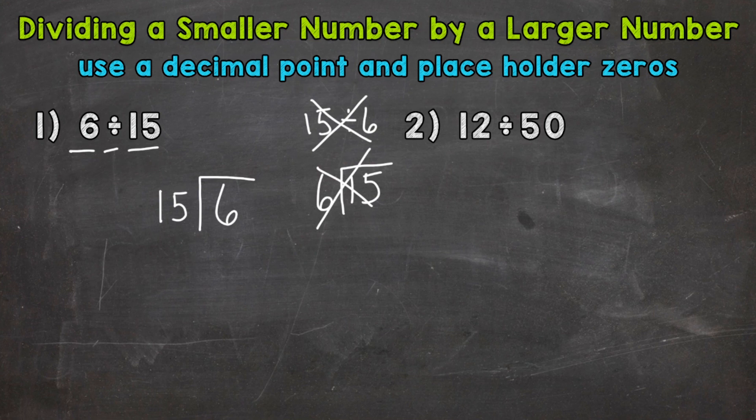And we'll start with our division process. So divide. How many whole groups of 15 can I pull out of 6? Well, I can't do that. So 0. We cannot pull any whole groups of 15 out of 6. Multiply. 0 times 15 is 0. Subtract. 6 minus 0 is 6.